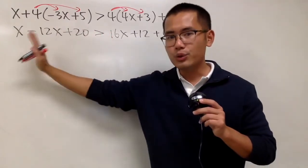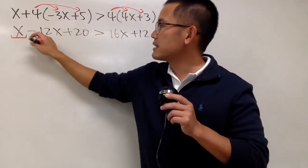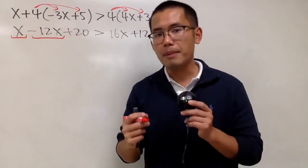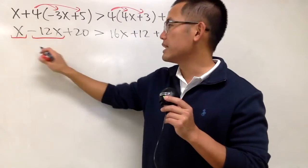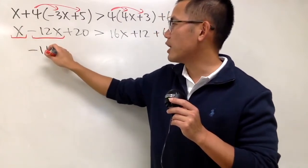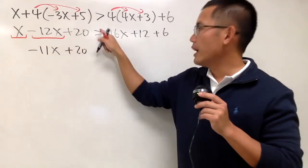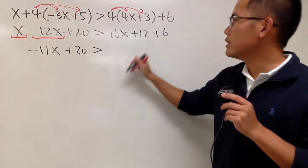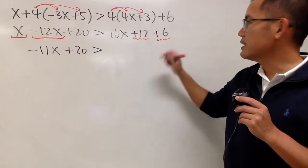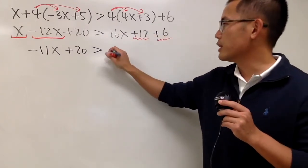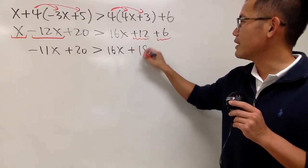Now pay attention to both sides. On the left, x minus 12x can be combined: 1 minus 12 is negative 11, so we have negative 11x. Keep the plus 20 and bring down the greater than symbol. On the right side, 12 plus 6 equals 18, so we have 16x plus 18.